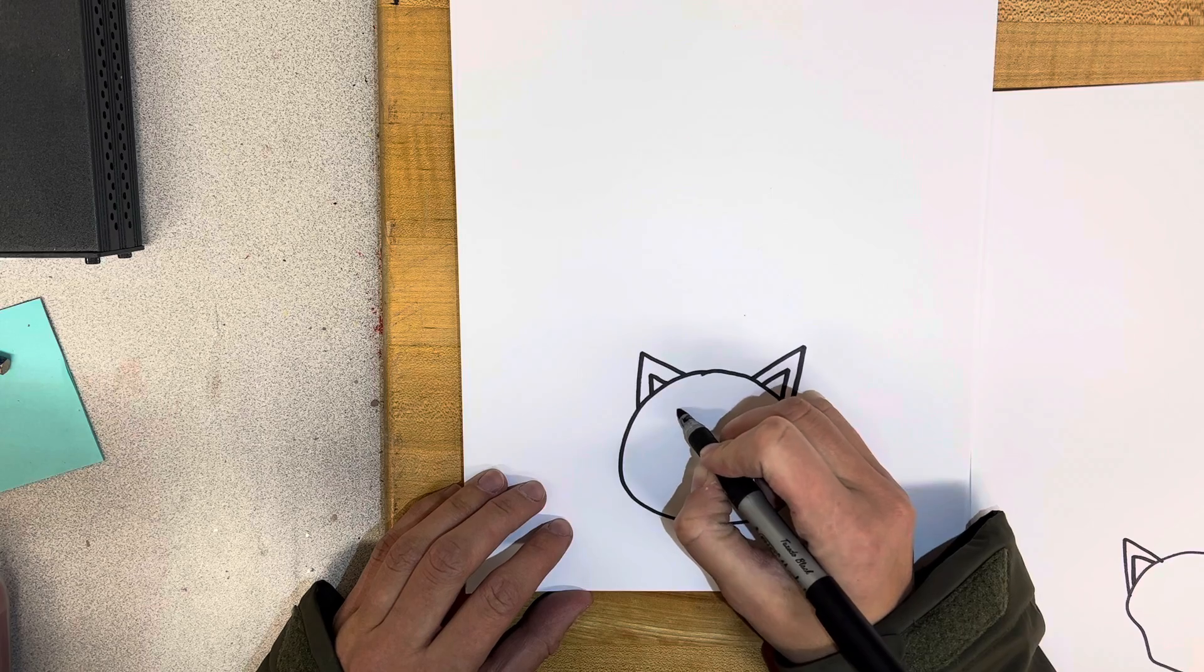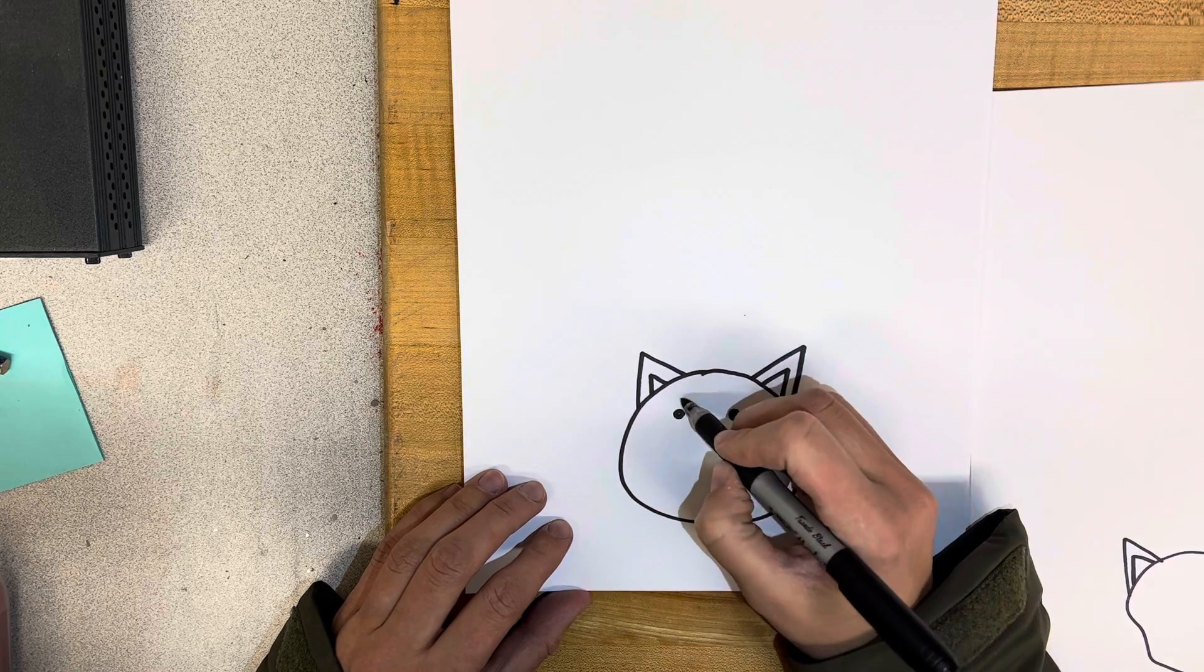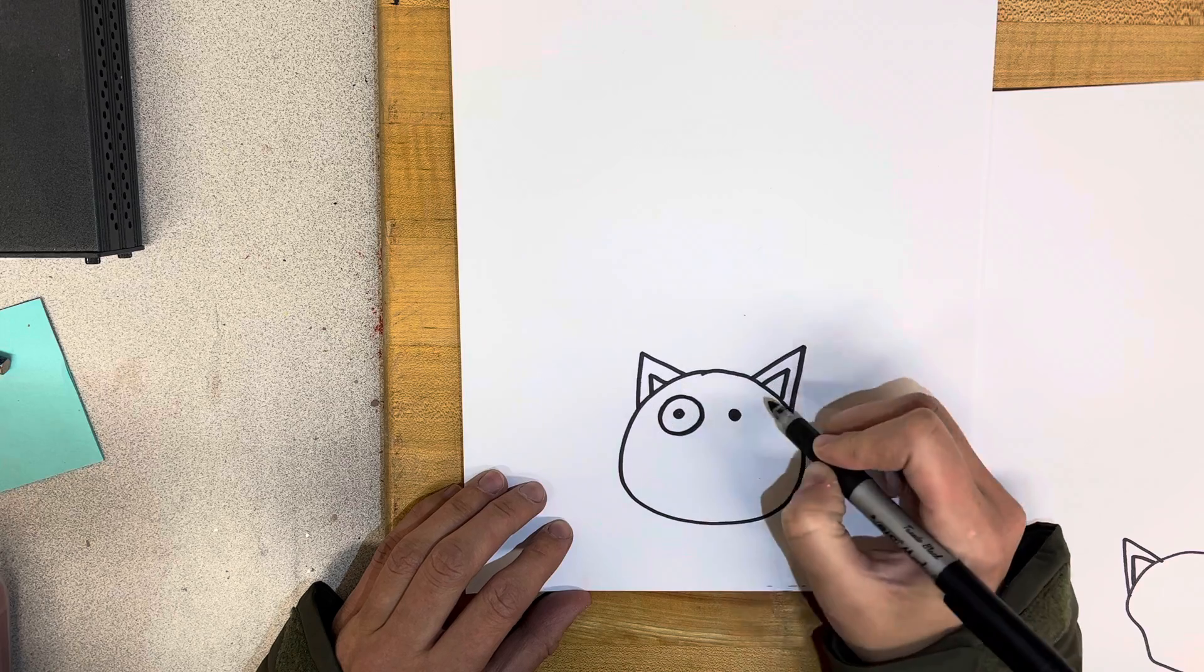Now we're going to do the eyes. You can keep it simple and just do dots if you want to. You could also put a circle around your dot.